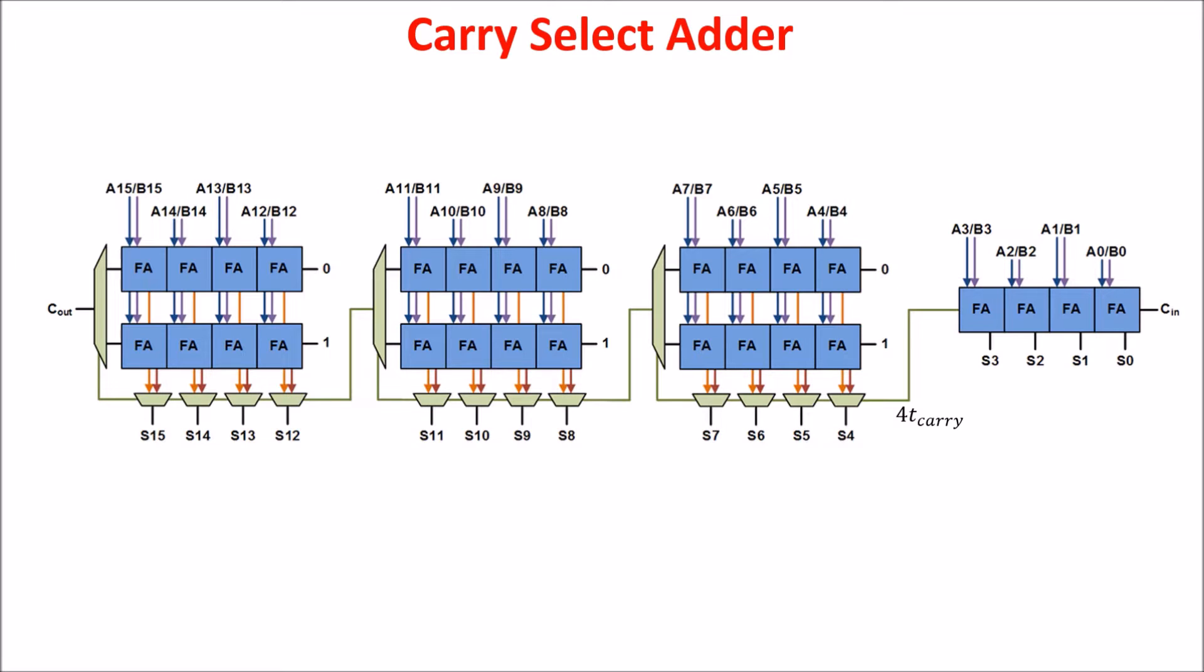When C4 arrives, the sums of lines 1 and 0 of all blocks are ready on the input of the multiplexers. Indeed, after 4T-carry, all these sums are ready. For having the sums S4 to S7 stable, we must additionally wait for the delay of the multiplexer. So the total time for having S4 to S7 is 4T-carry plus T-mux.